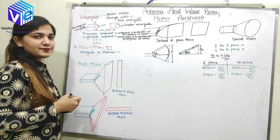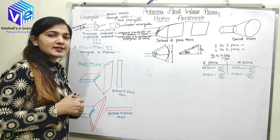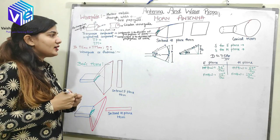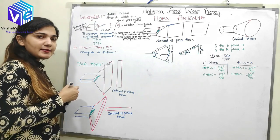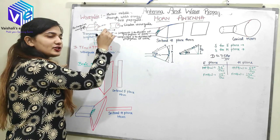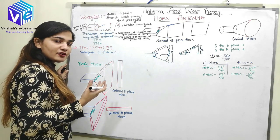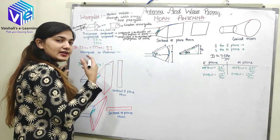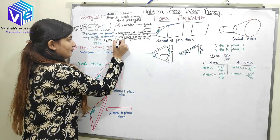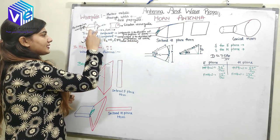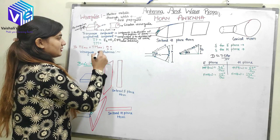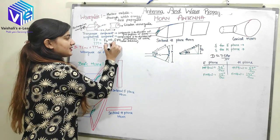Now we have two terms: transverse electric and transverse magnetic. Transverse electric means the electric field is perpendicular to the direction of propagation. If the direction of propagation is Z, the electric field should be perpendicular to Z, meaning EZ is equal to 0 — the electric field component in Z direction is always 0 in transverse electric wave propagation. Similarly, in transverse magnetic, the magnetic field in Z direction should be 0.